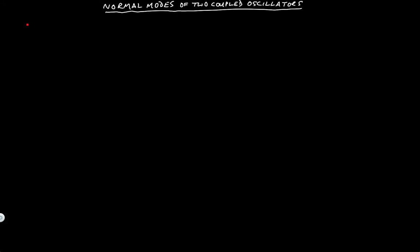I'm going to discuss the normal modes of two coupled oscillators. Let's start by considering a fixed wall to which we attach a mass by a spring. This is our canonical, our ideal example of a system.